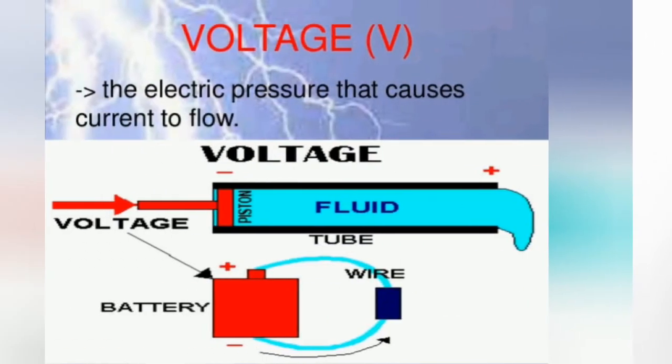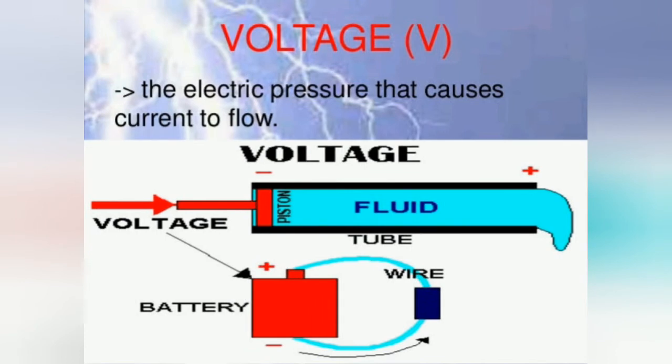This energy is produced by generators, batteries, solar panels, etc. The amount of energy available at a source to move a specific amount of charge is known as the terminal voltage of that source.